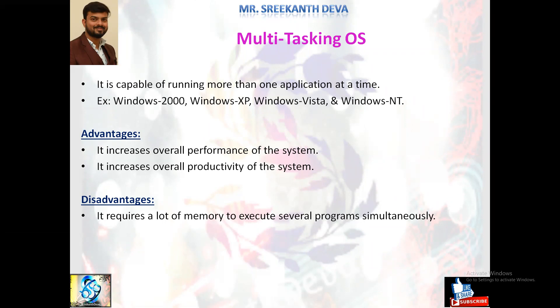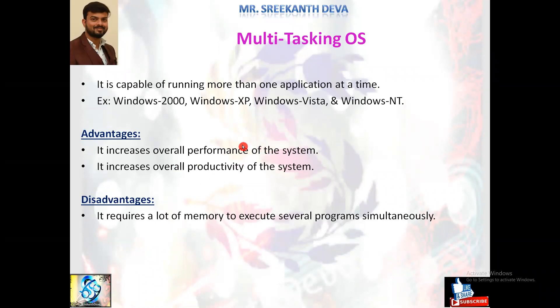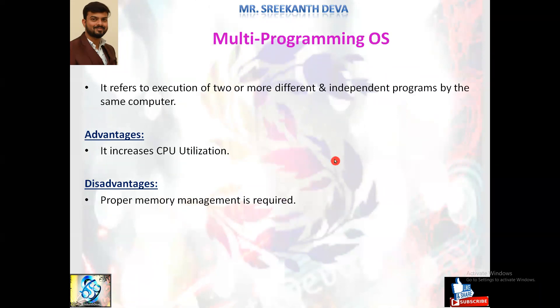Suitable examples of multitasking OS include Windows 2000, XP, Vista, and up to the latest versions. Advantages: increases overall performance and productivity of the system, as it can execute different tasks in parallel. Disadvantages: requires a lot of memory to execute several programs simultaneously, and special mechanisms are required to prevent interference among processes.